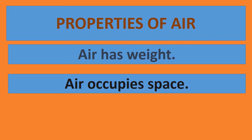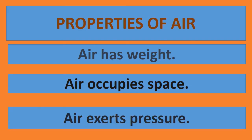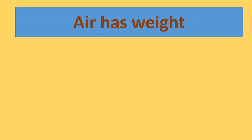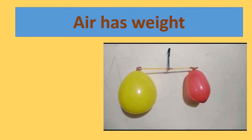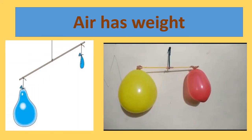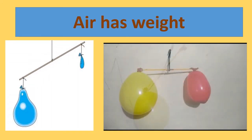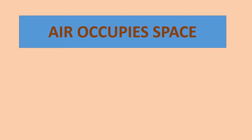Let us discuss the properties of air. Air has weight, air occupies space, and air exerts pressure. To prove that air has weight, blow up two balloons and tie them at the ends of a stick. Balance the stick by shifting the position of the balloons. Now prick one balloon and let the air escape. When all the air escapes, the stick tilts towards the air-filled balloon. This shows that air has weight.